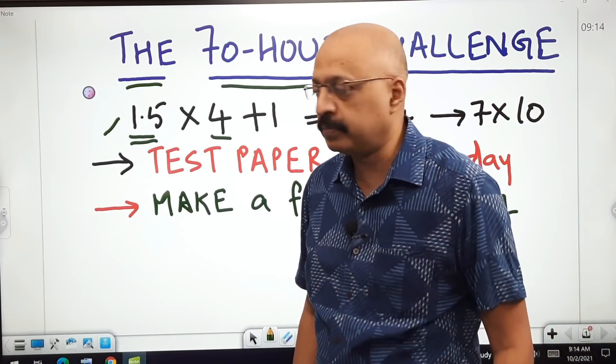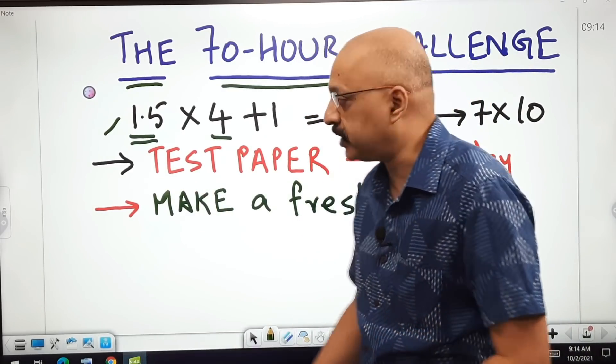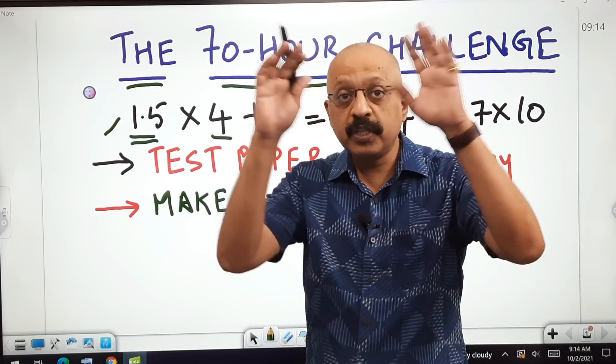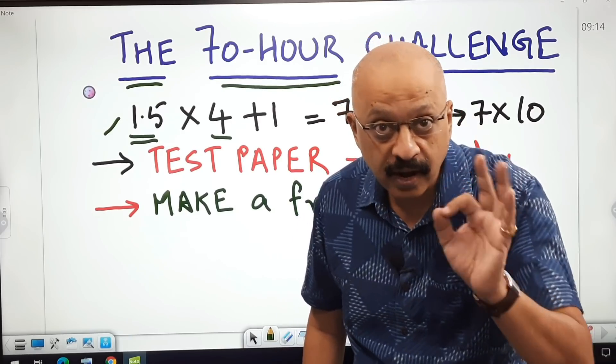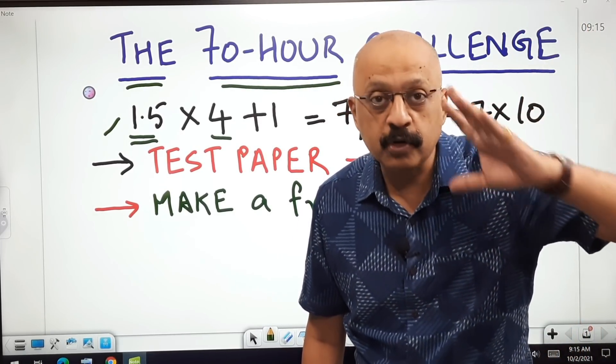The next day, take another four subjects, so one and a half hours each, and you decide which periods your one and a half hours will be. Ideally, it should be one and a half hours in the morning because the morning time is when you are absolutely fresh.